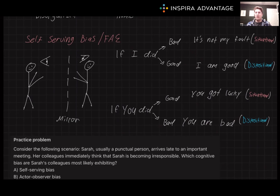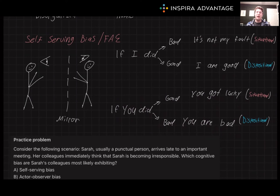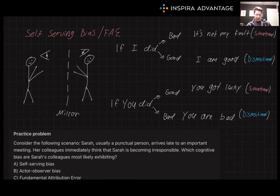For the MCAT, understanding attribution theory is absolutely essential. It helps in analyzing social interactions and psychological phenomena, crucial for the psych/social sections of the exam. Grasping this theory enables a deeper understanding of human behavior, invaluable for your future medical career. You can expect anywhere from two to four questions on this on the MCAT, so make sure this is making sense. To check, here's a practice problem.